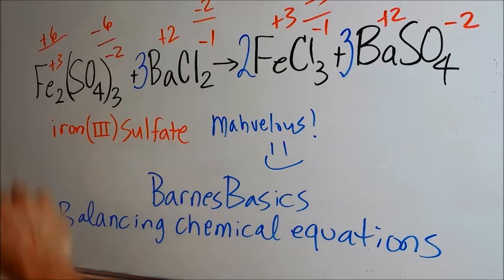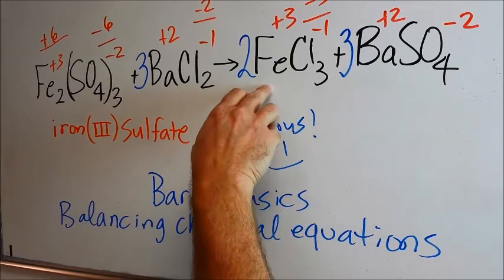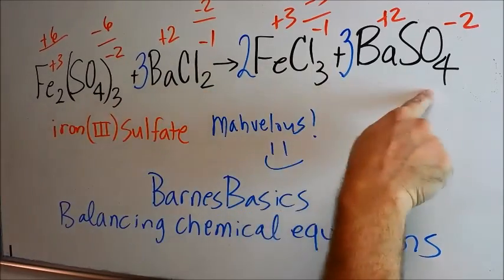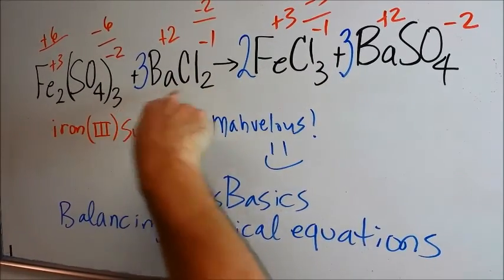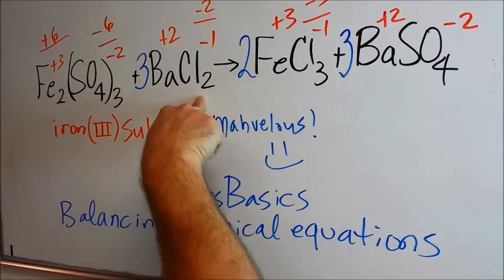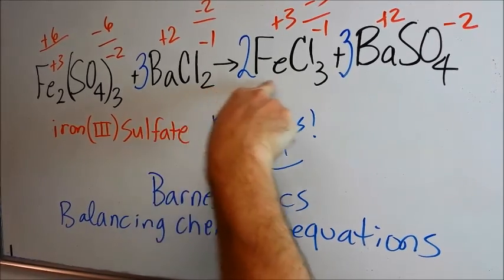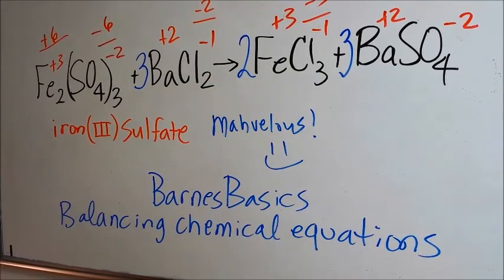To review we had two irons, two irons, three sulfates, three sulfates, three bariums, three bariums, three times two is six chlorines, two times three is six chlorines.